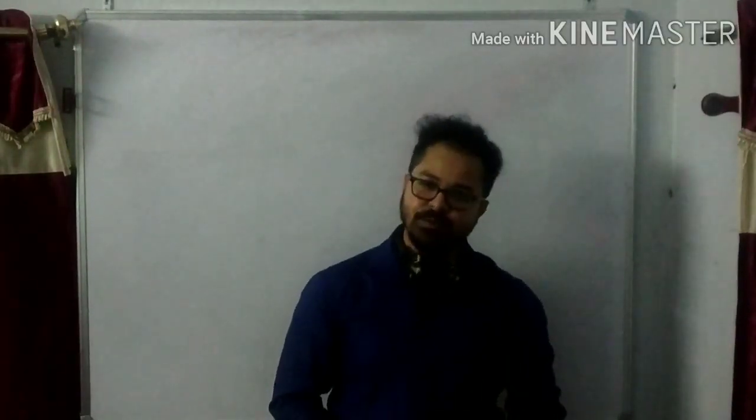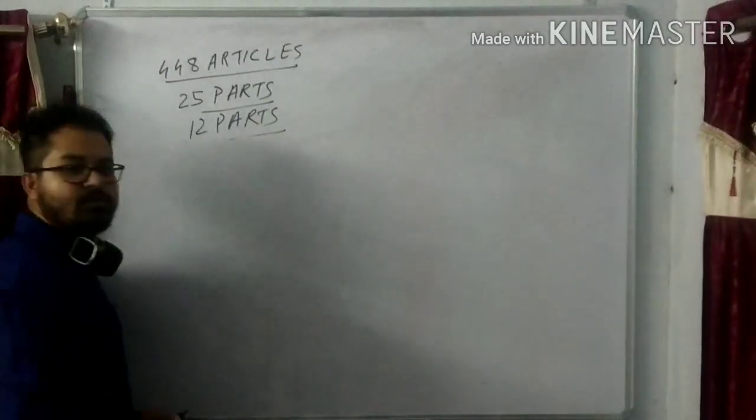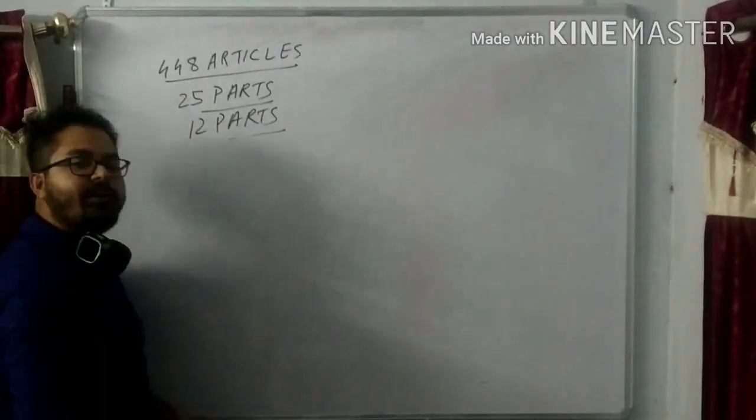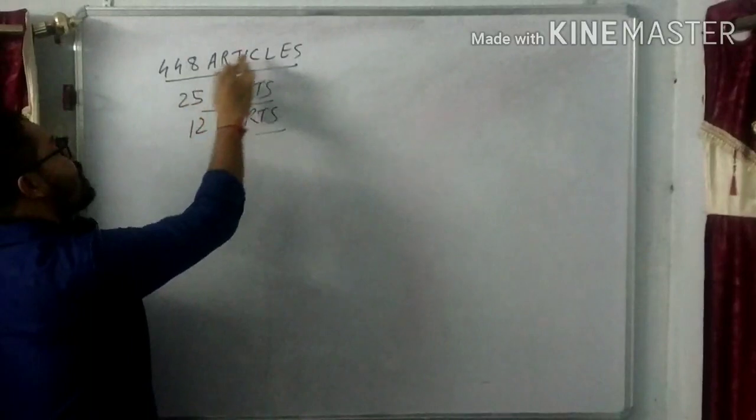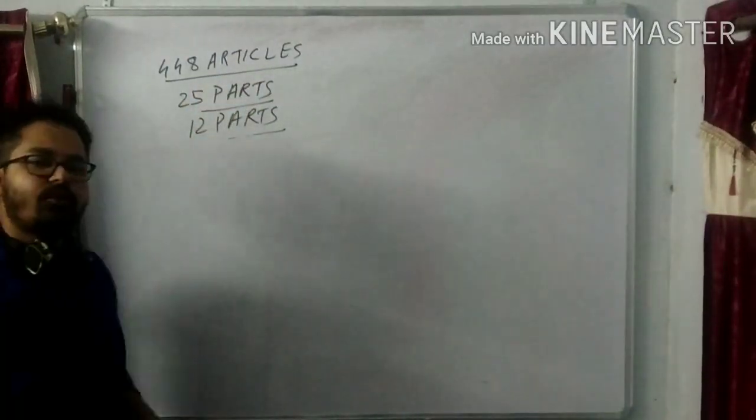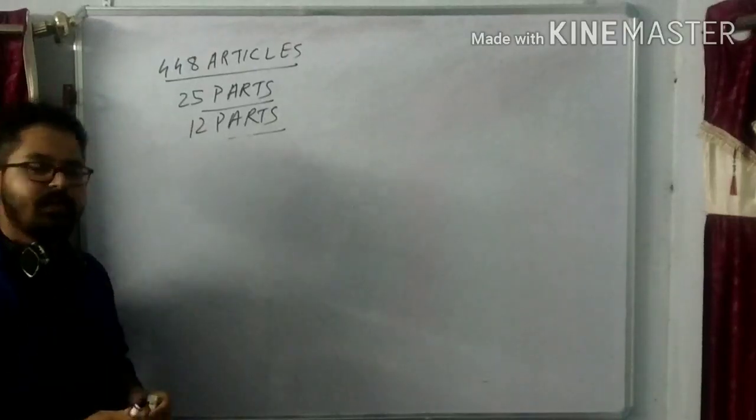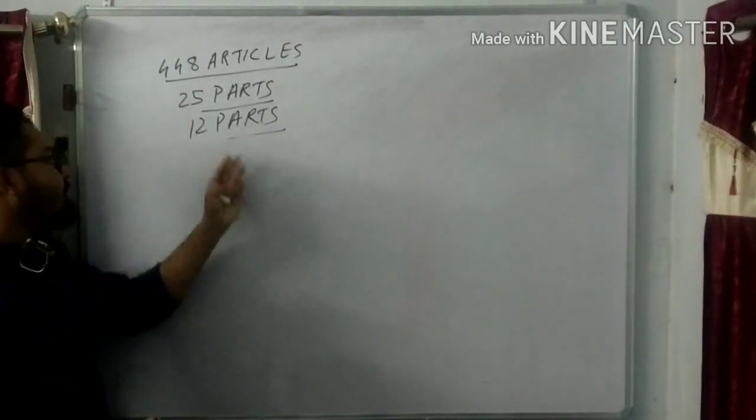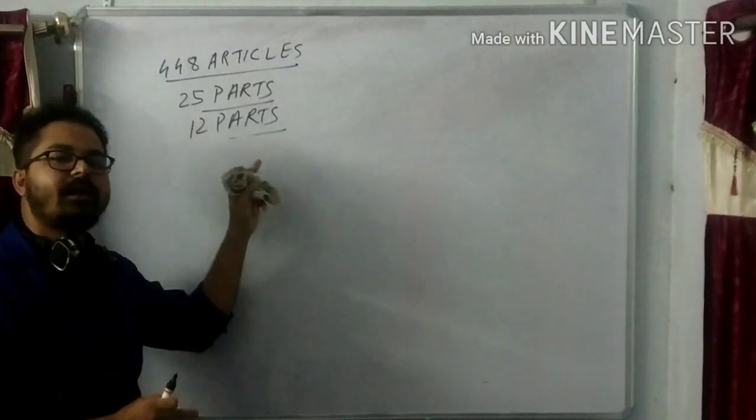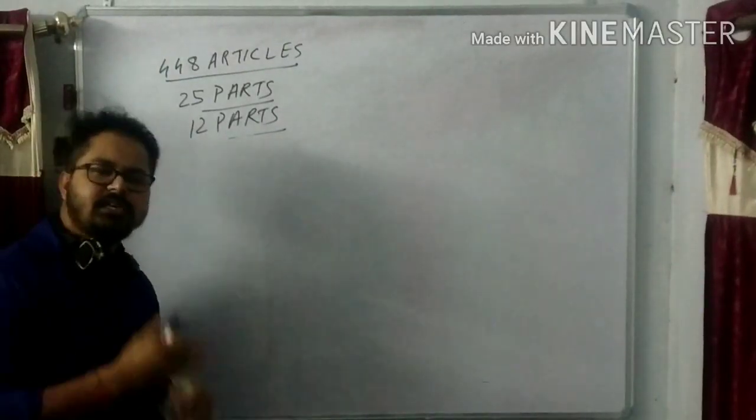Altogether there are 448 articles. These 448 articles can be found in 25 parts. Out of these 25 parts, we need to remember 12 parts. These 12 parts are important as questions are asked from them.